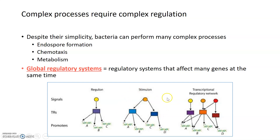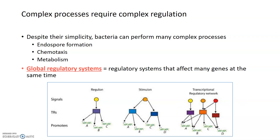There are also regulatory systems that don't react to just a specific signal, but rather to a stimulus. That stimulus can activate multiple receptors, each of which can then affect multiple genes. Even more complexly, there's a regulatory system known as a transcriptional regulatory network, where multiple signals are integrated through multiple receptors, each of which has multiple genetic expression outputs. All complex processes require regulation more like a transcriptional regulatory network.